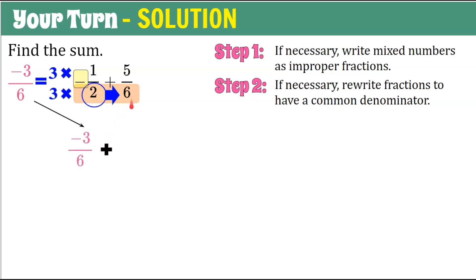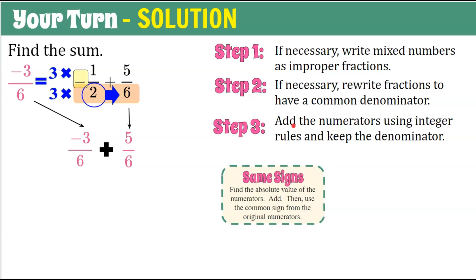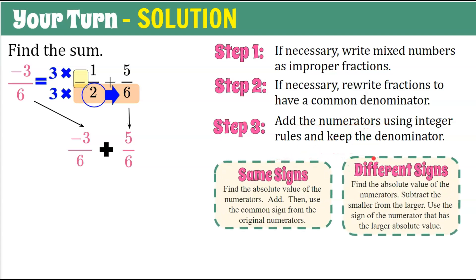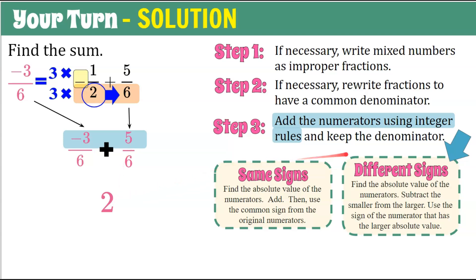We have negative three-sixths plus five-sixths. Step three: add the numerators using integer rules. Our numerators are negative three and five — different signs. We find the absolute values: absolute value of negative three is three, absolute value of five is five. Five is the larger, so the result will be positive. Five minus three is two, so the numerator is positive two. We keep the denominator six, giving us two over six.